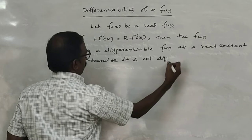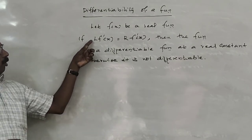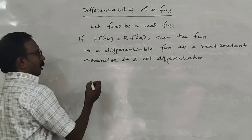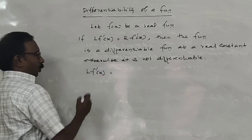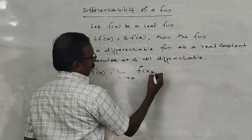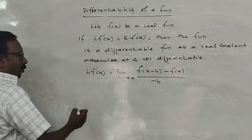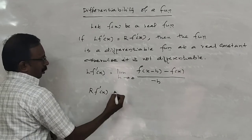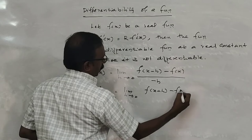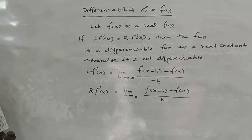A function is differentiable means Left of f'(x) is equal to R of f'(x). The left derivative L of f'(x) is the limit as h tends to 0 of f(x minus h) minus f(x), divided by minus h. And R of f'(x) is the limit as h tends to 0 of f(x plus h) minus f(x), divided by h. If these two are equal, then the function is a differentiable function.